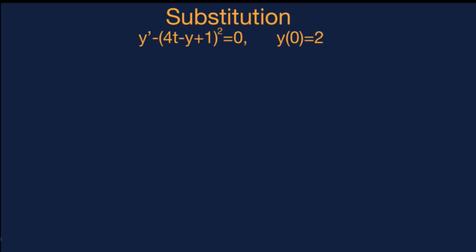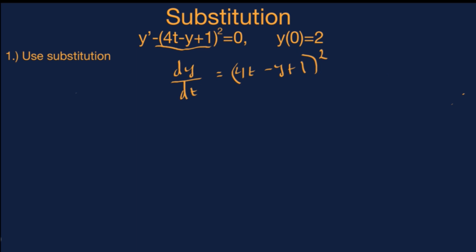Let's make things more concrete by solving this initial value problem. We start by solving for the derivative of y — adding a term to both sides gives us the derivative of y with respect to t is equal to 4t minus y plus 1, all squared. The first step is substitution, so we can say that v is equal to this linear combination of t and y.